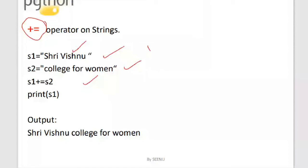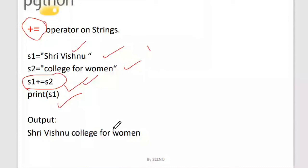Understanding string immutability is very important. The syntax s1 += s2 is totally valid. It creates a new string 'Sri Vishnu College for Women' and assigns it to the reference variable s1. S1 is the reference variable pointing to the object, similar to a pointer pointing to a value. So you can use compound assignment in-place operators on strings as well.